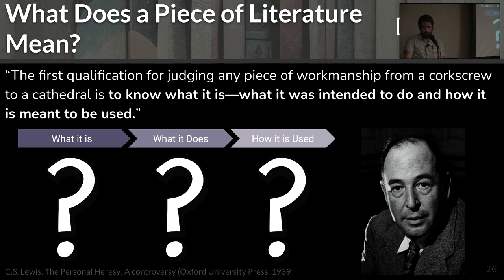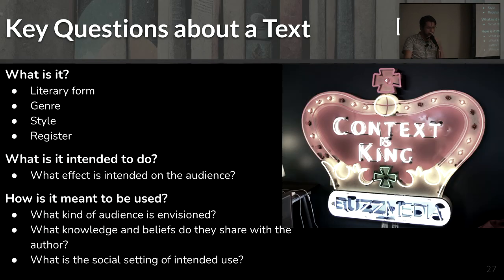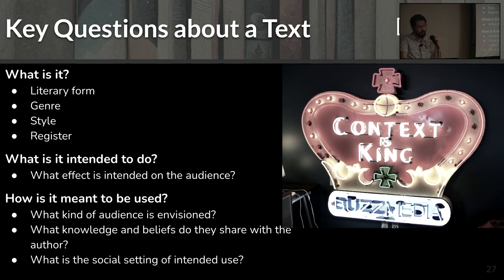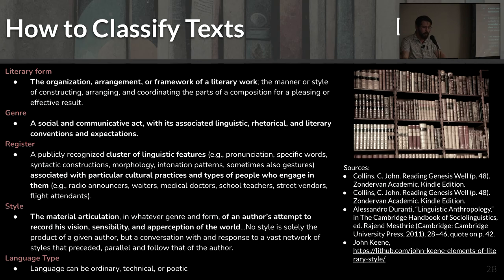To be more specific: when we talk about what a text is, we have to talk about its literary form, the genre, the style, the register of speaking — what effect it's intended to have on the audience, what kind of audience is envisioned, what knowledge or beliefs that audience shares with the author, and what is the social setting of the intended use. The Old Rock story is intended to be used at Midnight Yell, which has a very specific social use. You don't use it outside of that — it would be very inappropriate, for example, to do an Old Rock story at a church service. Socially inappropriate.